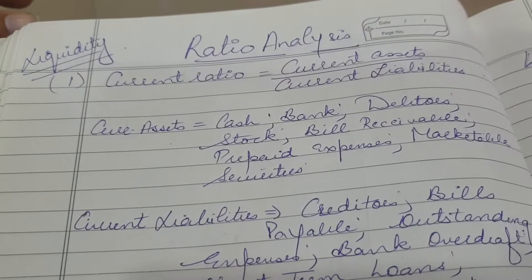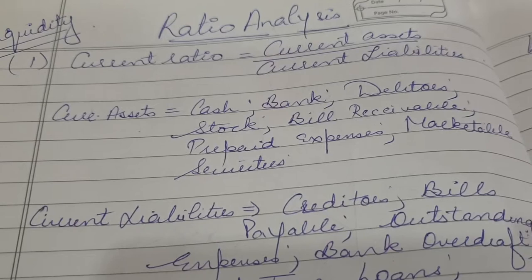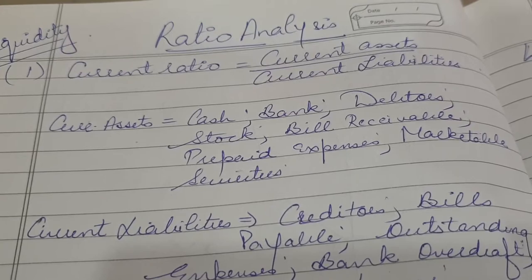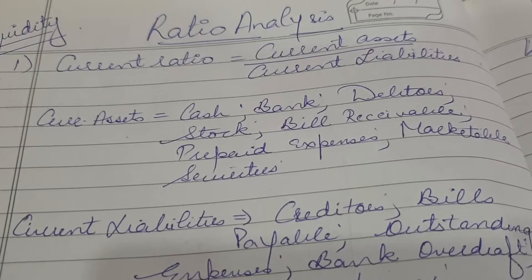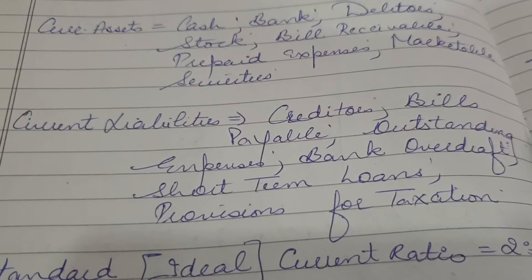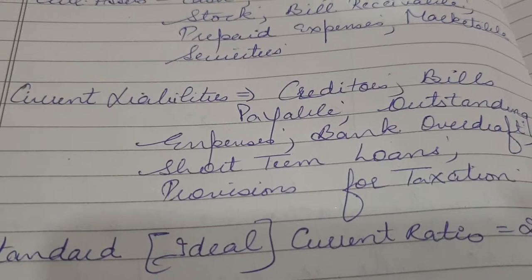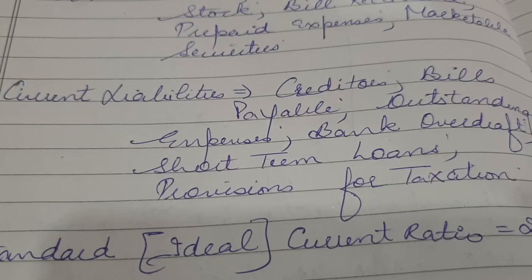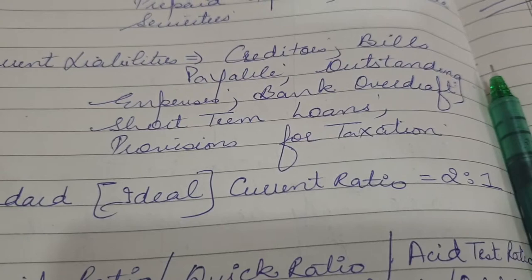Hello friends, today we will cover the concept of ratio analysis on the basis of liquidity. First of all, there is current ratio. Current ratio is current assets upon current liabilities. Current assets include cash, bank, stock, debtors, bills receivable, prepaid expenses, and marketable securities. Current liabilities include creditors, bills payable, outstanding expenses, bank overdraft, short-term loans, and provision for taxation. The standard or ideal current ratio is 2:1.